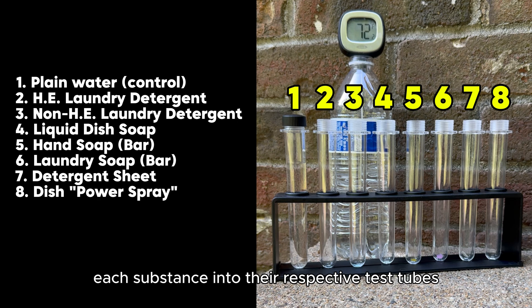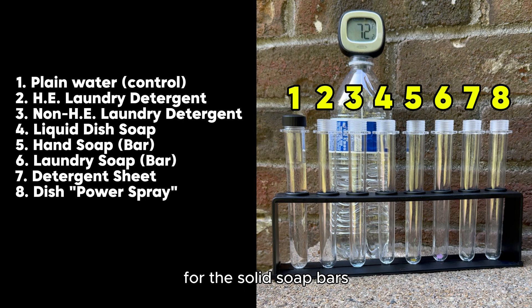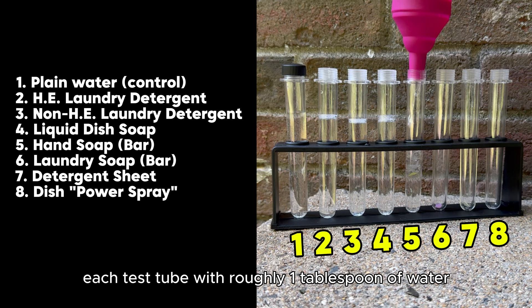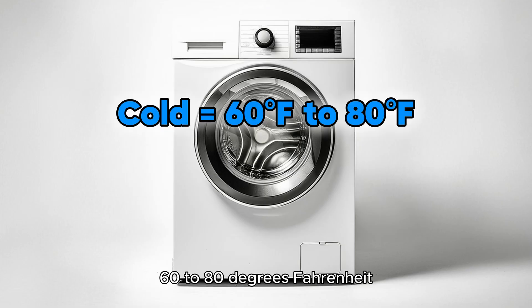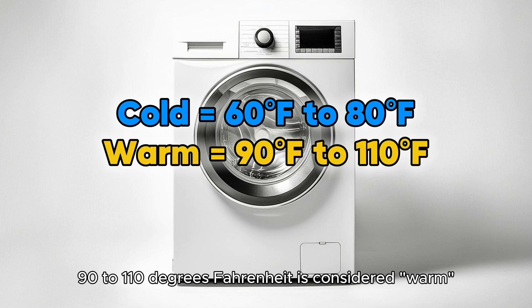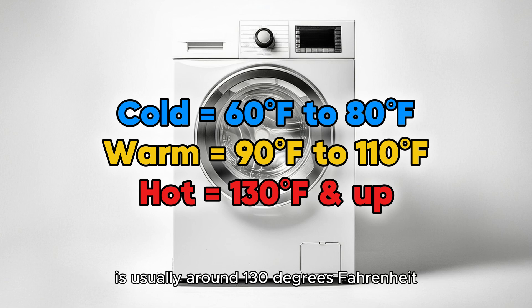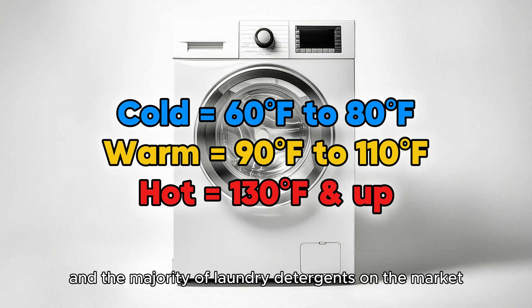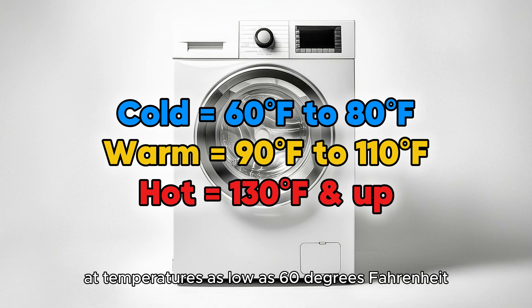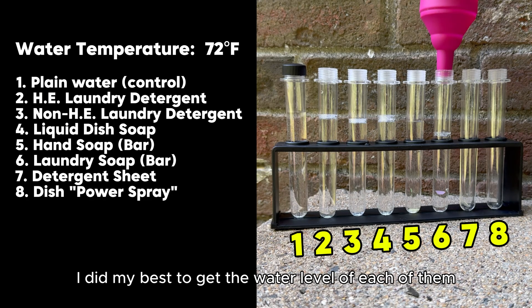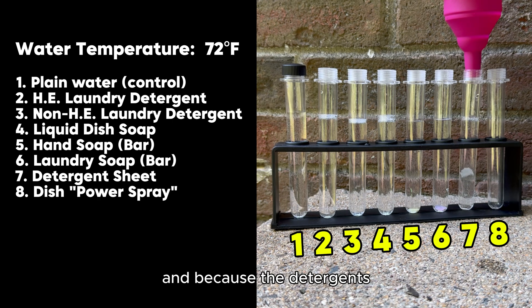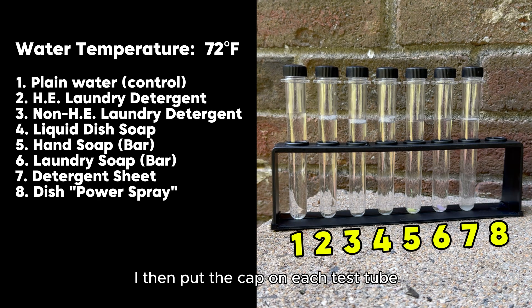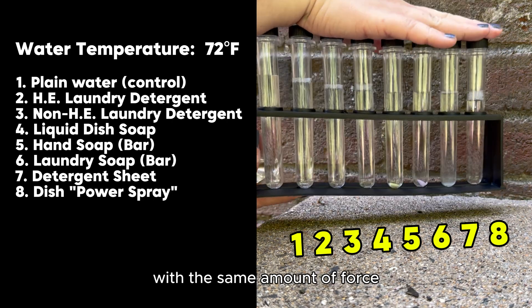For liquids, I did a single drop. For the solid soap bars, I did a small shaving of the bar, and for the detergent sheet, I tore off a tiny corner of it. Then I filled each test tube with roughly one tablespoon of water at 72 degrees Fahrenheit. In a washing machine, 60 to 80 degrees Fahrenheit is generally considered cold, 90 to 110 degrees Fahrenheit is considered warm, and the hot setting is usually around 130 degrees Fahrenheit. So while 72 degrees Fahrenheit is in the middle of the cold range, the majority of laundry detergents are rated to work at temperatures as low as 60 degrees Fahrenheit, so 72 should work just fine. I then put the cap on each test tube and shook all of them together with the same amount of force the same number of times.